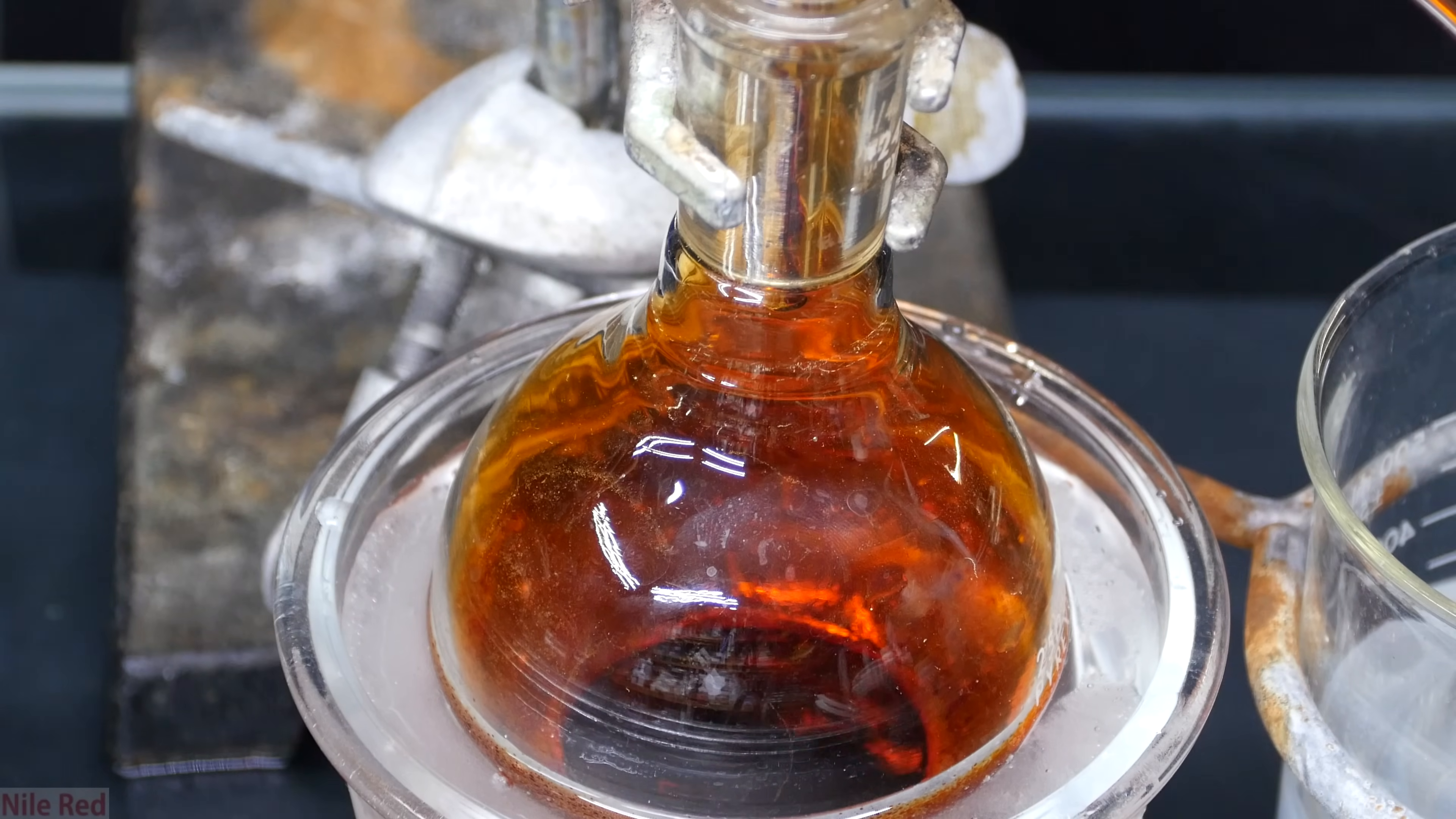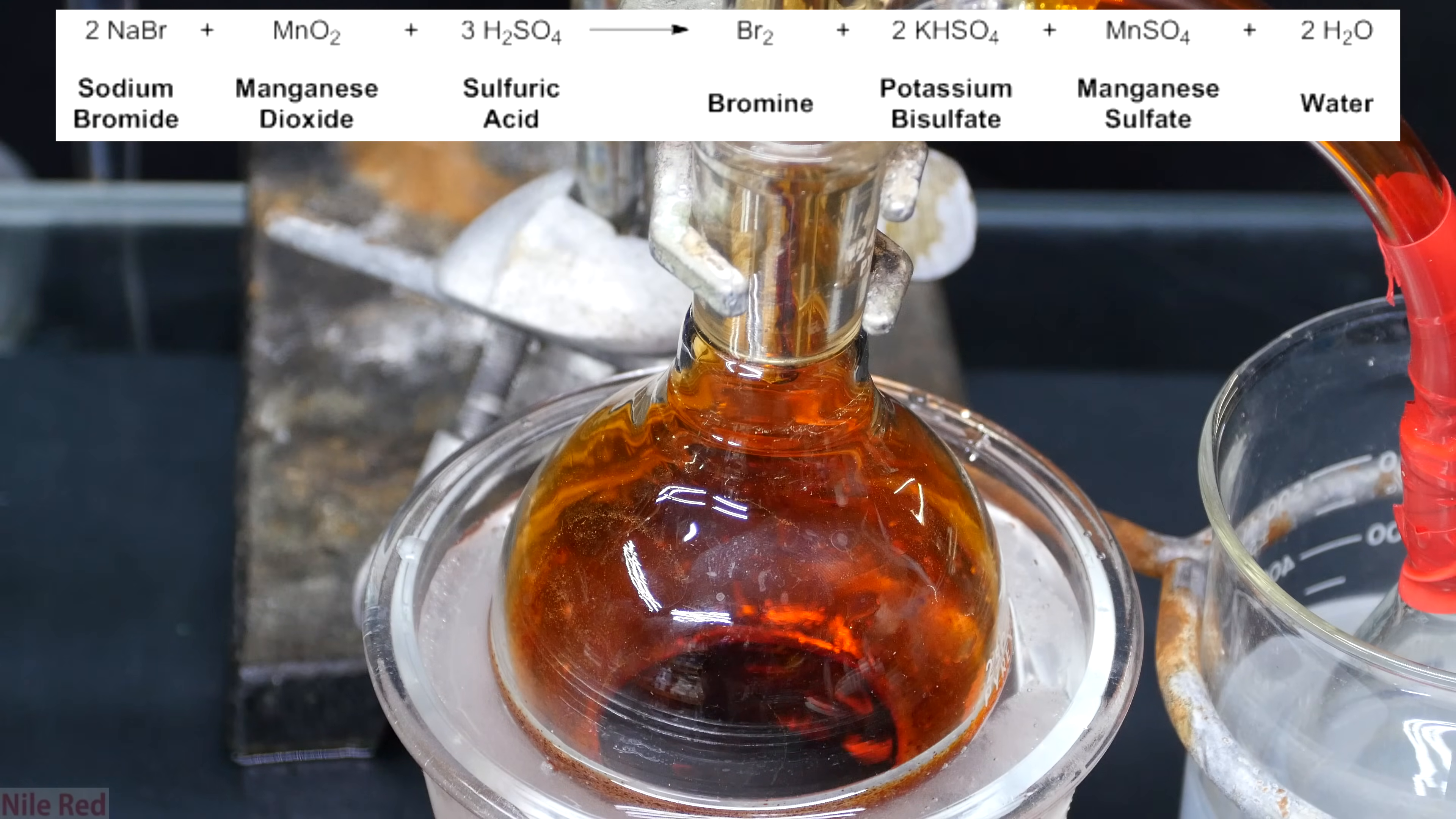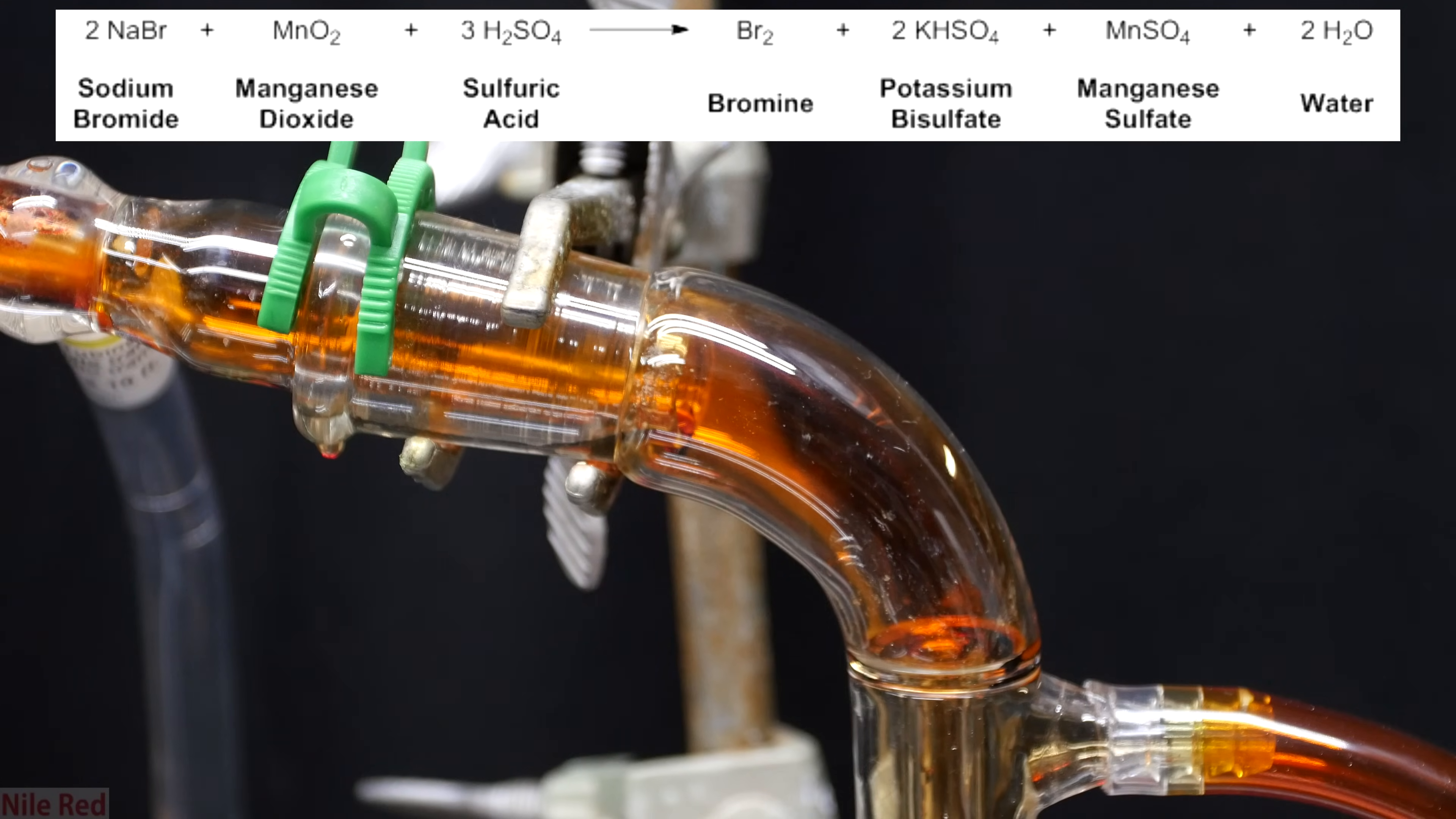When we go to the side of the receiving flask, we can see that the dripping rate is pretty steady. You can see the reaction that's going on here, where we have sodium bromide, manganese dioxide, and sulfuric acid all reacting together to form bromine, potassium bisulfate, manganese sulfate, and water. All of the products should remain in the reaction flask, except for the bromine which is being distilled off.